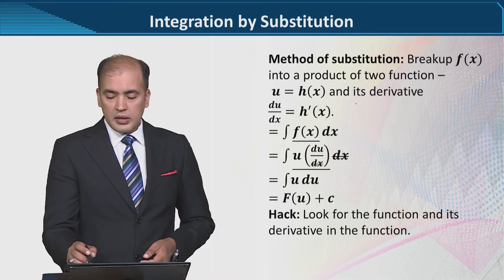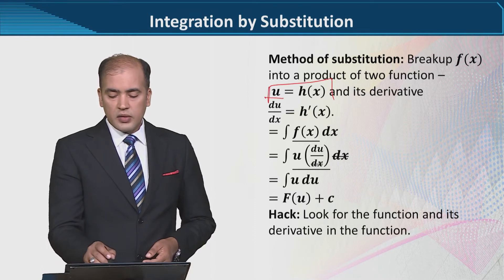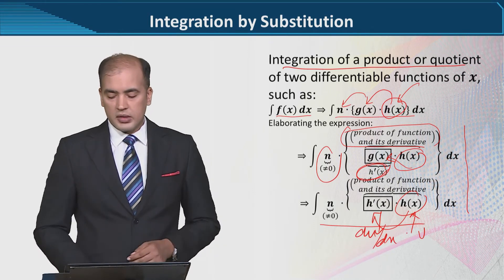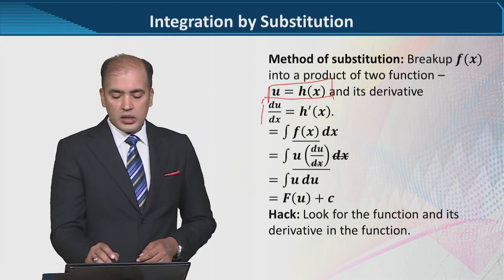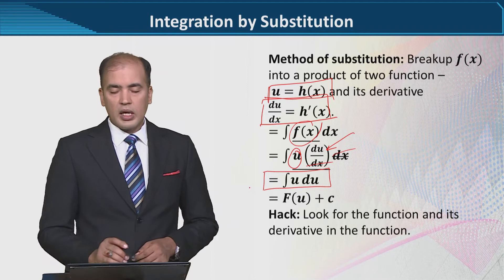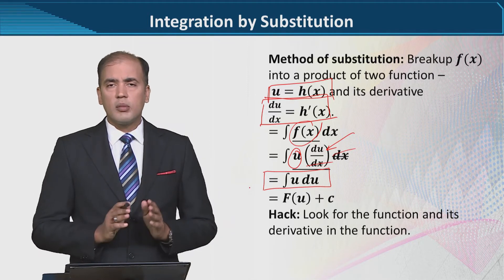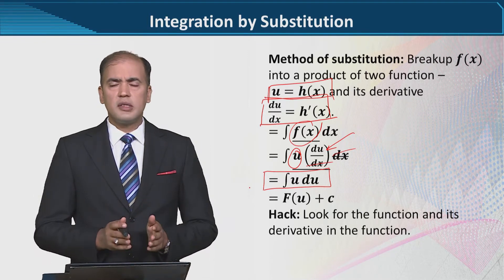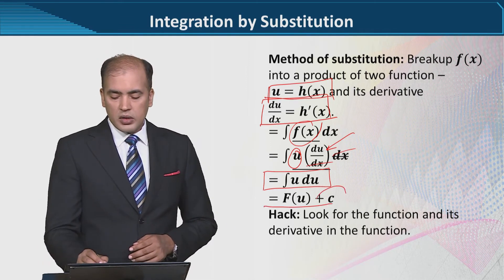Now let's walk through the method. This is the breakdown method you have seen. We assume u equal to h(x). This is h(x) which we have assumed to be a function — we call it u — and from this we get du/dx. So this process will be complete. du/dx is found, then f(x) is broken down: we get u and its derivative. And when we cancel dx with dx, the integration we are left with is only in terms of u — that is what we wanted, because we made the substitution and introduced a new variable u. We wanted the entire expression in terms of u so we could easily integrate it. And when we integrated it, the integrated result was generated as a function developed in terms of u.